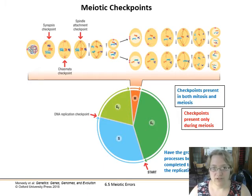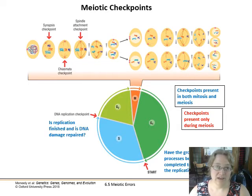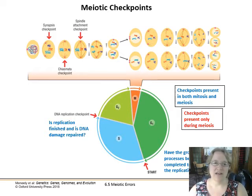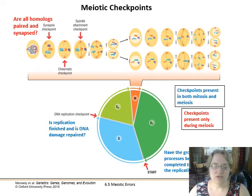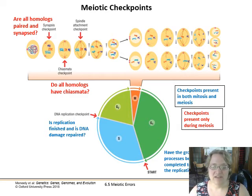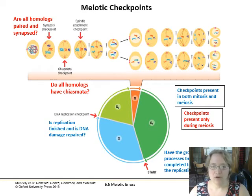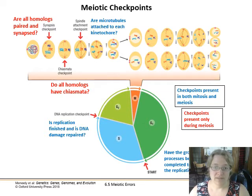At the end of growth phase one, the checkpoint asks whether growth processes have been completed before DNA replication starts. The next checkpoint is after DNA synthesis, checking whether replication is finished and any DNA damage has been repaired. Once entering meiosis, there's a checkpoint in prophase asking whether all homologues are paired and synapsed. The chiasmata checkpoint checks whether homologous chromosomes are forming chiasmata and having crossing over. Finally, are the microtubules attached to each kinetochore? That also happens in mitosis.